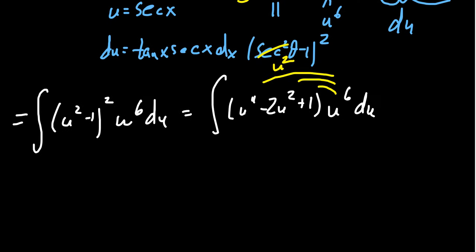I then would recommend distributing the u to the sixth onto all three pieces. Doing that, we end up with the integral of u to the tenth minus two u to the eighth plus u to the sixth.